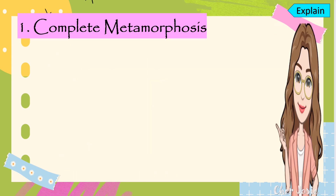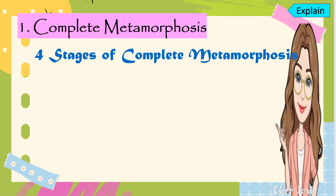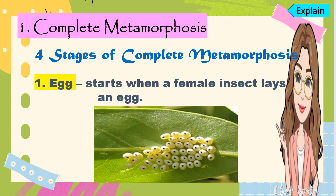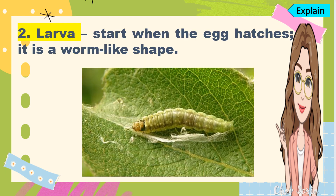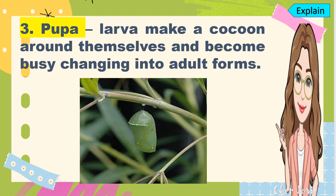The first stage of complete metamorphosis is the egg. The egg stage starts when a female insect lays an egg or some eggs. This picture shows an example of the egg of a butterfly. The next stage is the larva — it starts when the egg hatches and is worm-like in shape, also called caterpillar or instars. The third stage is the pupa, where the larvae make a cocoon around themselves and undergo change into adult form. It takes weeks for the pupa to develop into the fourth stage.